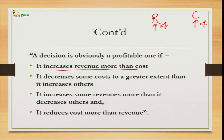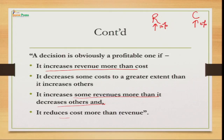The third point: if a decision increases some revenue more than it decreases other. If revenue from product A is increasing and revenue from product B is decreasing, but the increase in A is comparatively more than the decrease in B, the decision is profitable because it ultimately increases total firm revenue. The fourth point: if a decision reduces cost more than revenue — if both are decreasing, cost should decrease more — then again the decision is profitable.